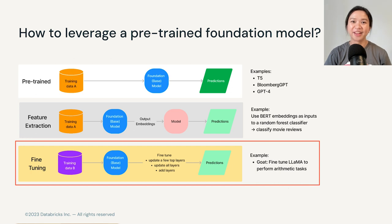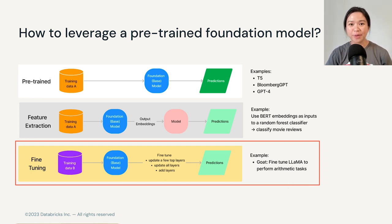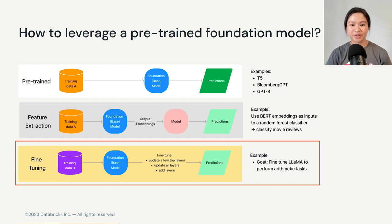We'll look at one of the newest LLM examples in this category, which is a model called GOAT — unsurprisingly, another farm animal. It is a fine-tuned version of LLaMA to perform arithmetic operations, and we'll return to GOAT in a few slides.